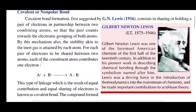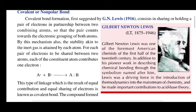Sometimes one atom may donate a pair of electrons for sharing. Looking at the diagram, any atom A or atom B that has electrons in its outermost shell — if it has some electrons in its outermost shell — then those electrons can be shared to make the outermost shell stable, filling it with two electrons.